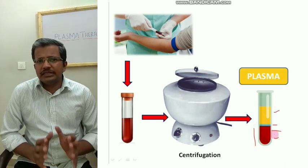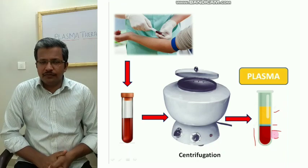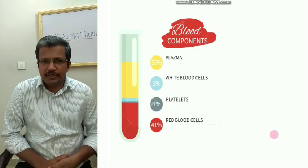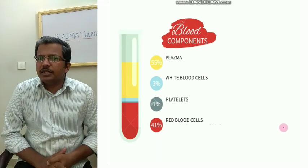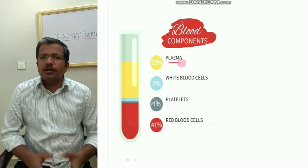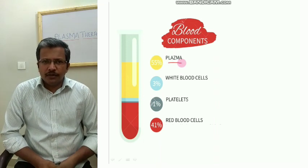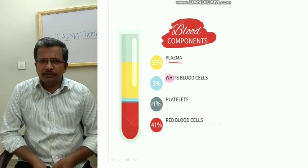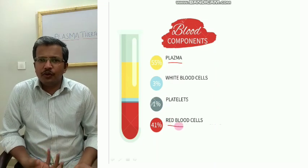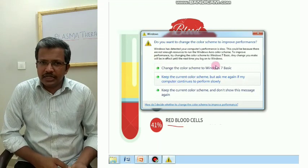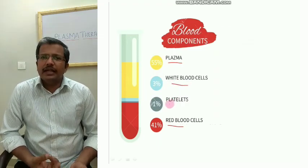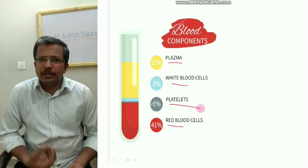Our focus is on the plasma, which forms 55% of your blood, because plasma contains all the components needed for your body's immune response. RBC is concerned with the transport of oxygen and carbon dioxide, WBC is concerned with the immune response, and platelets are concerned with blood clotting.